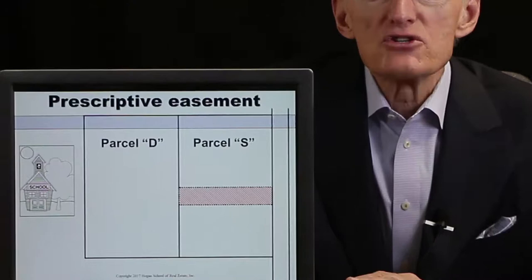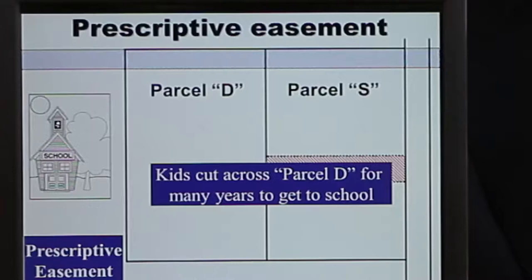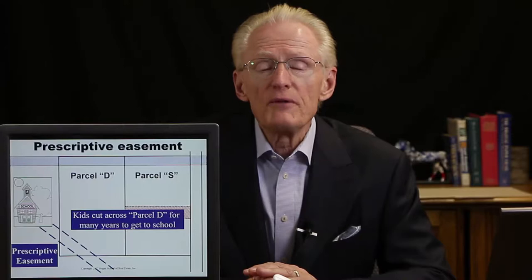The last type is called a prescriptive easement — one that comes about through long and continuous use. For example, back to parcel D and parcel S: there's a school around the corner, and kids cut across parcel D to get to and from school. After long and continuous use, it's very possible that the public could claim a permanent easement across parcel D, and that would be referred to as a prescriptive easement. A prescriptive easement comes about under what's known as adverse possession. Long and continuous use can give rise to a permanent prescriptive easement, or as we'll see in another video, give rise to actual ownership under adverse possession.